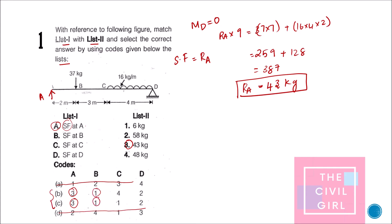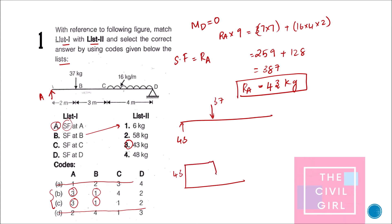For B, it is option 1 for both remaining choices, so shear force at B is going to be 6. We have 43 here, and since 37 is applied here, 43 minus 37 gives us 6. So the shear force reduces from 43 to 6. Next, we need shear force at C. Up to point C, the shear force will be constant.